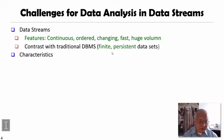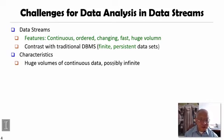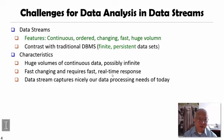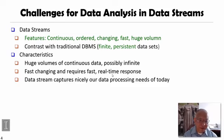Now let's look at the major characteristics of data streams. First, data streams usually represent huge volumes of continuous data. They could be potentially infinite, like online sensors, which have no ending at this point. They are fast-changing and may require fast real-time response, such as for anomaly detection or emergency handling. Data streams capture nicely our data processing needs today, because even in database systems, data could be so huge that you may only want to scan it sequentially, like data streams, without repeated access.